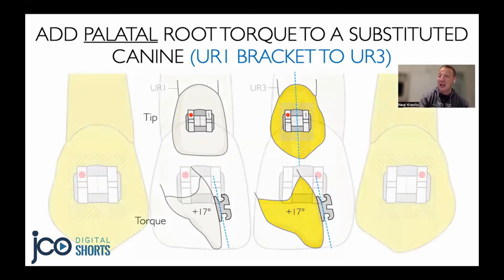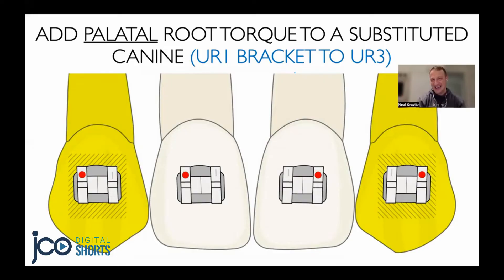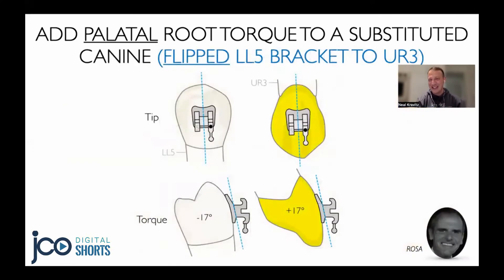If we take a close-up look in my office, this is what it would be. If I have bilateral substitutions, I'll have brackets that are 1-1-1-1 — very easy to remember and very aesthetic. A variation of this technique was popularized by Dr. Marco Rosa, who uses a flipped mandibular second premolar bracket for substituted canines.